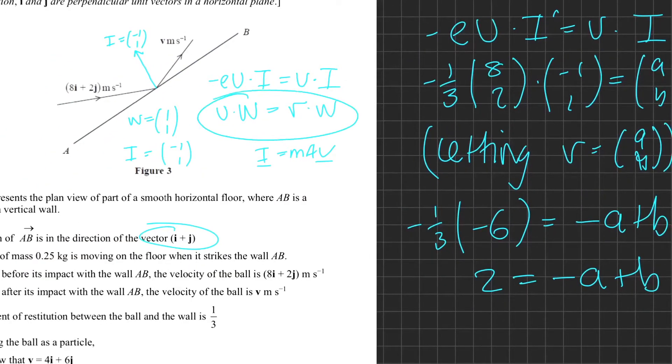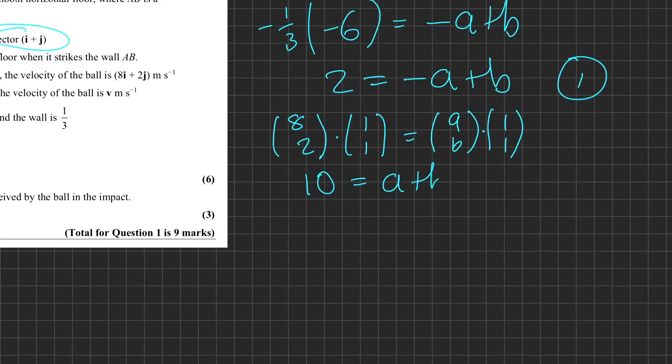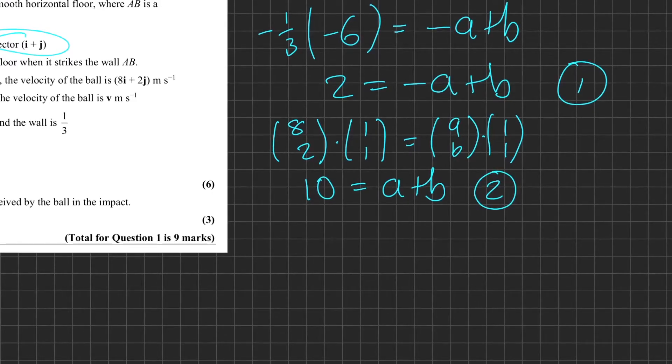That is where this second impulse equation comes in handy: u·w = v·w. Remember, we know w is a vector parallel to the wall, and that's (1,1) in our case. So u·w - that's (8,2) dot (1,1) - equals v, which we've let to be (a,b), dot w, which is also (1,1). So what's the second equation we get? Well, 8 + 2 is 10 when we dot product those, and that's equal to a + b.